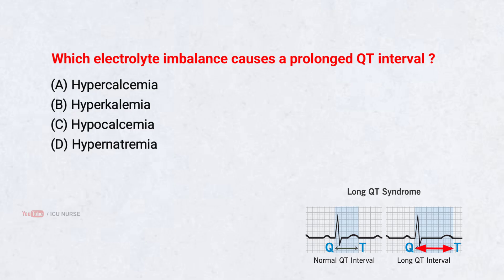Which electrolyte imbalance causes a prolonged QT interval? A. Hypercalcemia, B. Hyperkalemia, C. Hypocalcemia, D. Hypernatremia. Correct answer: C. Hypocalcemia.